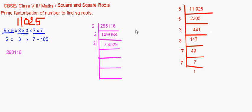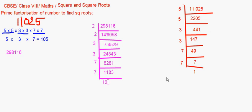Dividing 74529 by 3 gives 24843. Dividing 24843 by 3 gives 8281. That's not divisible by 3 anymore. Trying 7: dividing 8281 by 7 gives 1183. Dividing 1183 by 7 gives 169. And 169 is the square of 13, so it is divisible by 13.